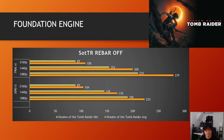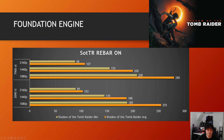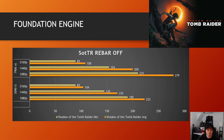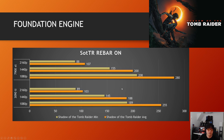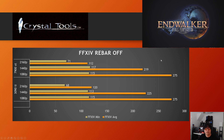Next is Shadow of the Tomb Raider — an oldie but goodie that many reviewers use for testing. With resizable bar off, the RDNA3 GPU massively outperforms RDNA2 in this title, beating the 3090 Ti at 1080p and 1440p before pulling back somewhat at 4K. With resizable bar enabled, the GeForce card benefits quite substantially — particularly at 1440p, jumping from 170 to nearly 190 FPS — closing the gap considerably.